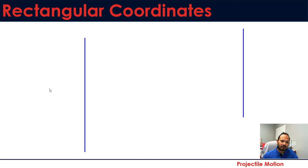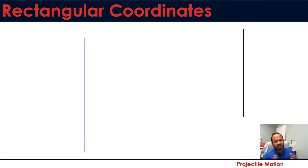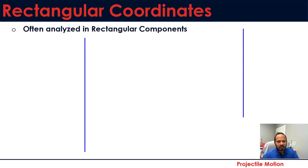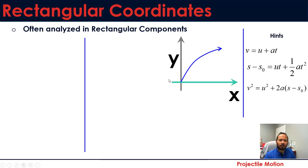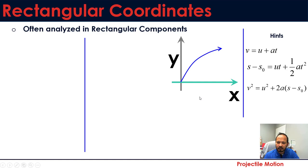So let's see how we can analyze projectile motion using rectangular coordinates. In this dynamics course, we will mostly use rectangular coordinates X and Y. Projectile motion is analyzed in rectangular components: X for horizontal and Y for vertical. We will use the three equations of motion from our continuous motion analysis for both horizontal and vertical analysis.